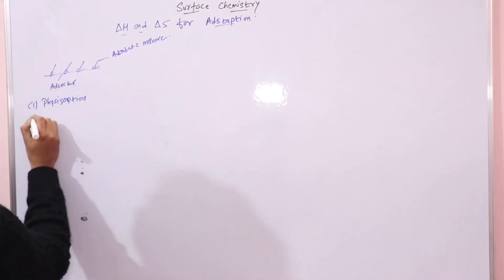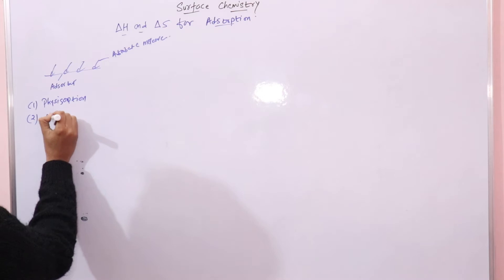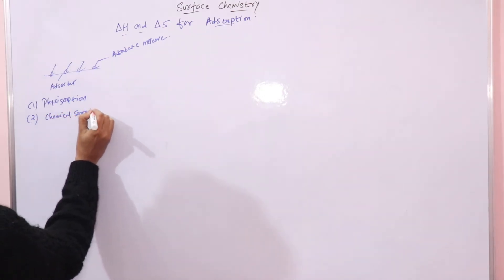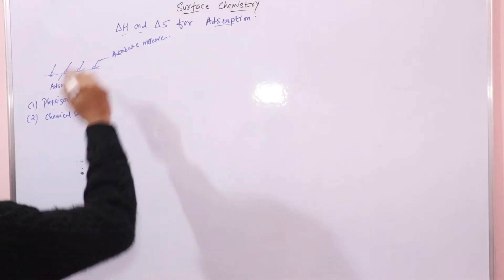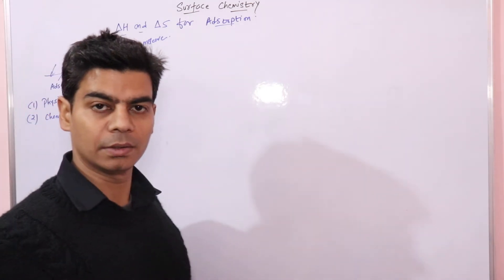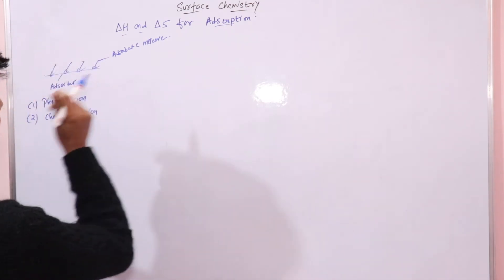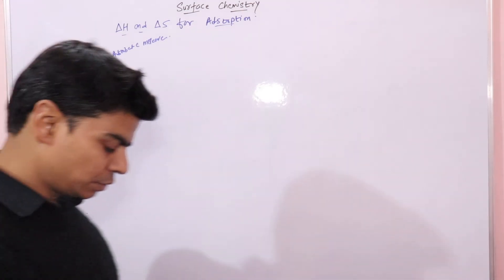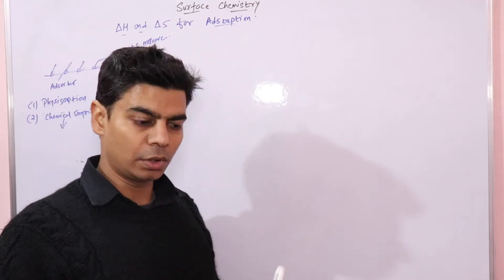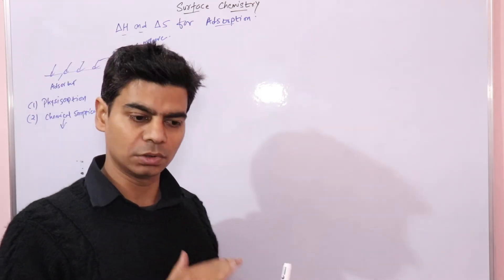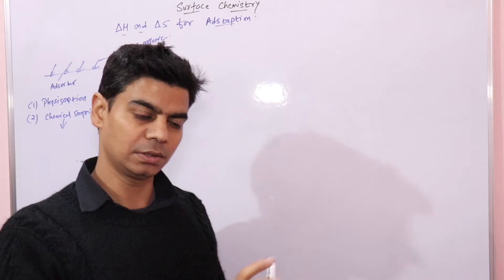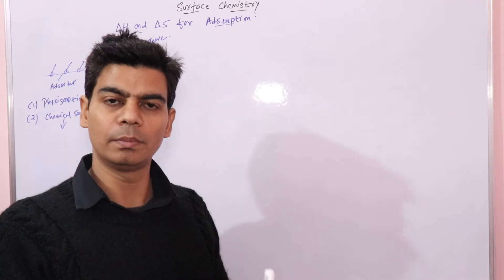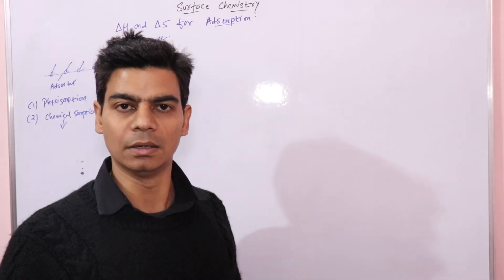There are two types of adsorption: physisorption and chemisorption. Chemisorption is when a chemical bond gets formed between adsorbate and adsorbent. For example, hydrogen gas gets adsorbed on the surface of nickel metal because a bond is formed between hydrogen and nickel.